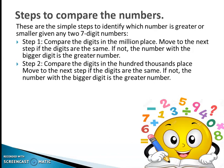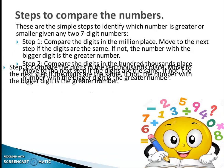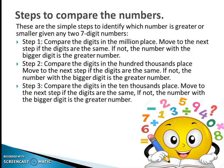Step 2: Compare the digits in the hundred thousands place. Move to the next step if the digits are the same. If not, the number with the bigger digit is the greater number. Step 3: Compare the digits in the ten thousands place. Move to the next step if the digits are the same. If not, the number with the bigger digit is the greater number.